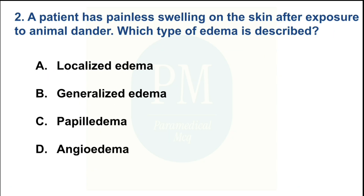A patient has painless swelling on the skin after exposure to animal dander. Which type of edema is described? Option A: localized edema. Option B: generalized edema. Option C: papilledema. Option D: angioedema. The correct option is Option D — angioedema.